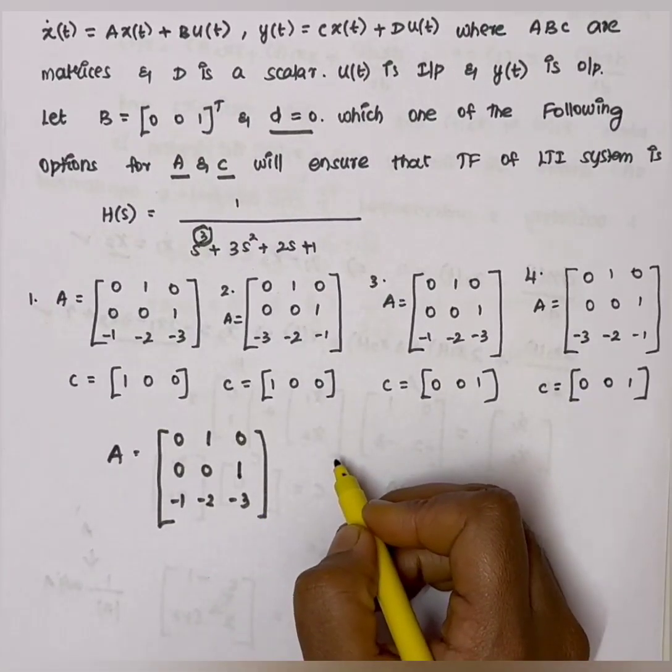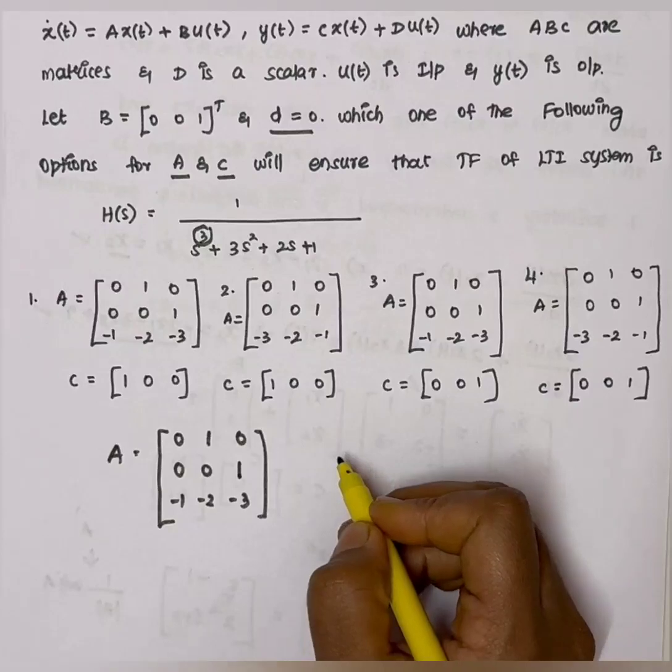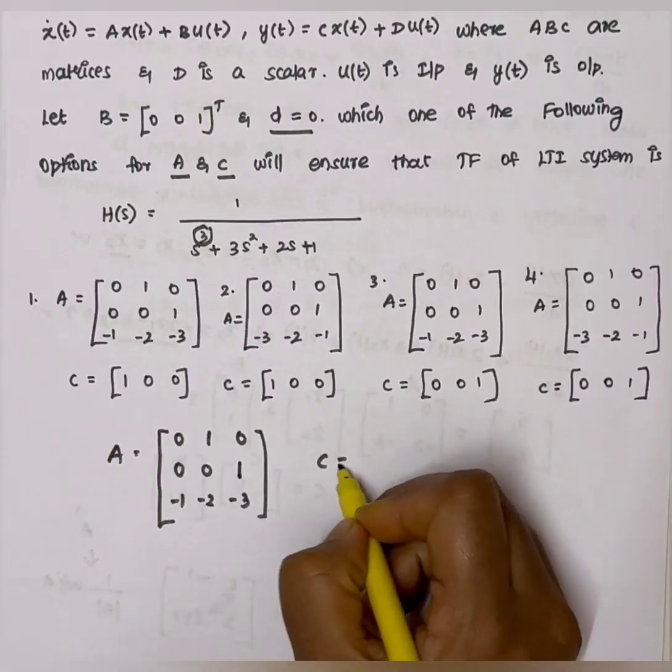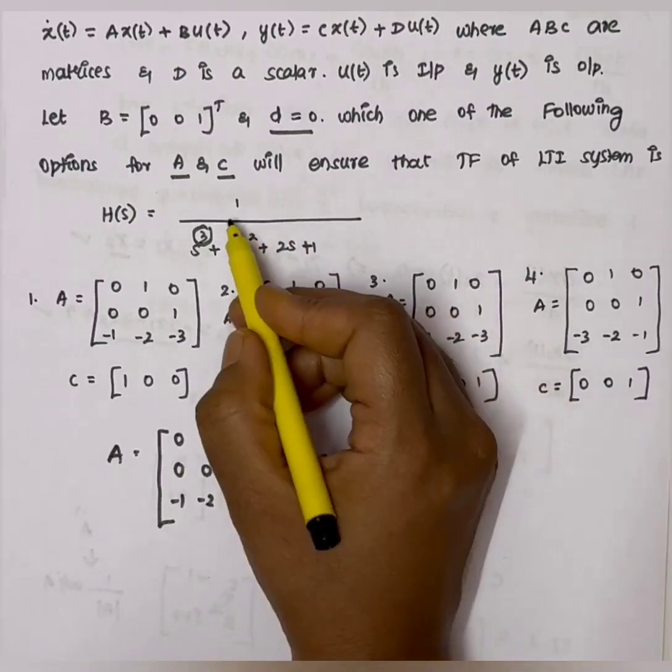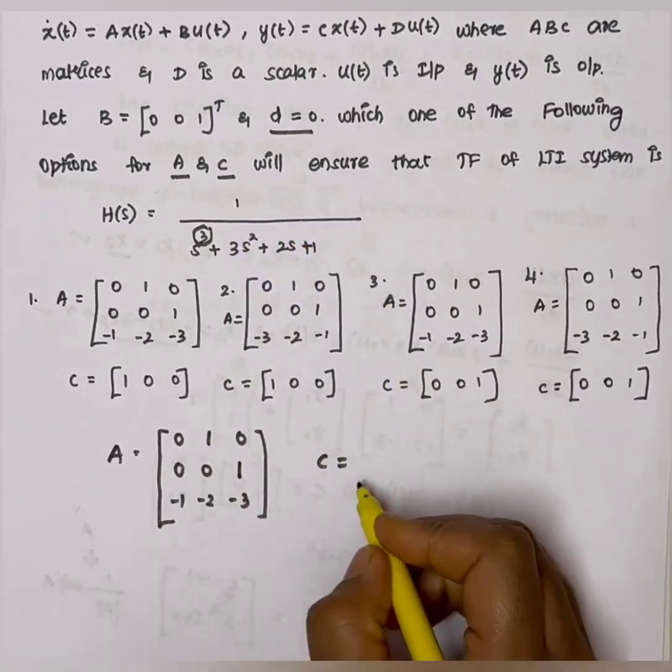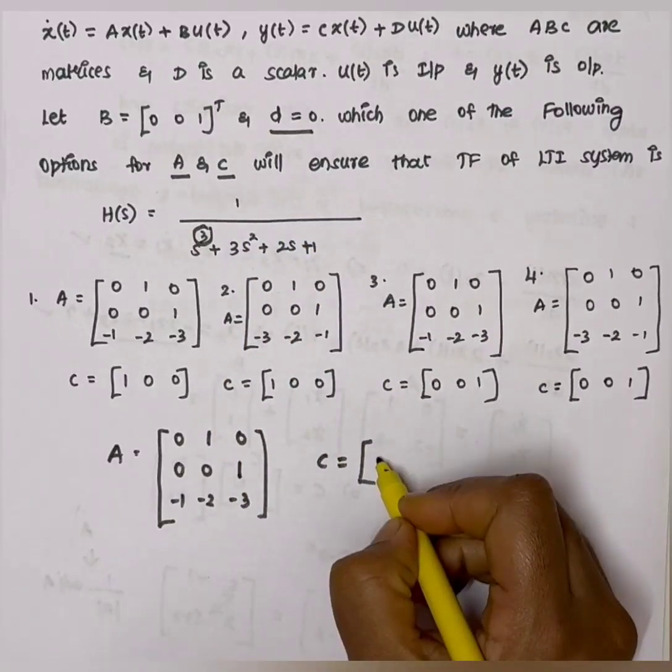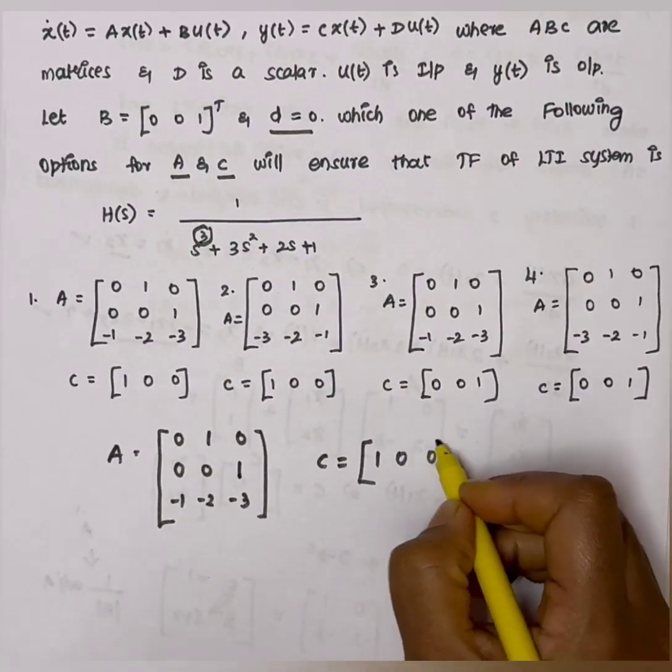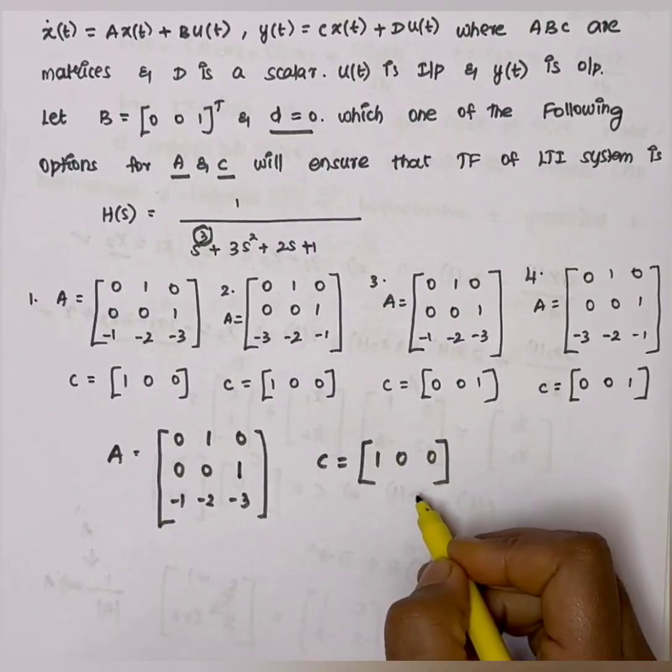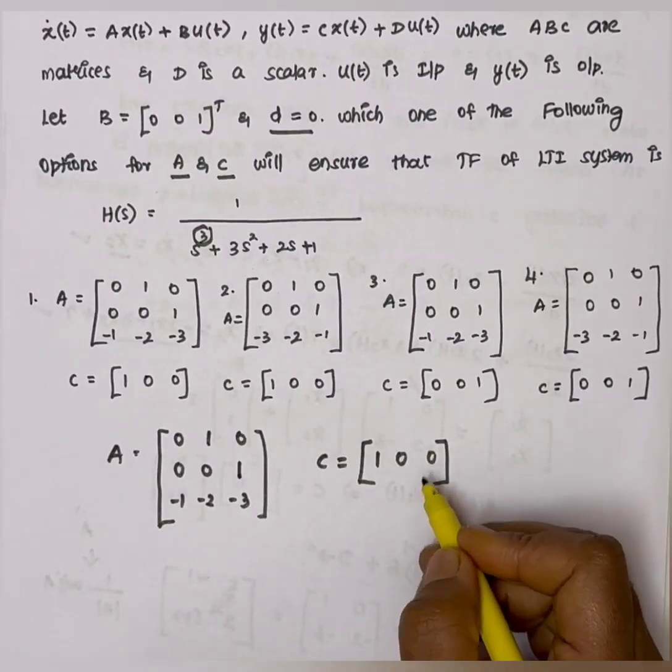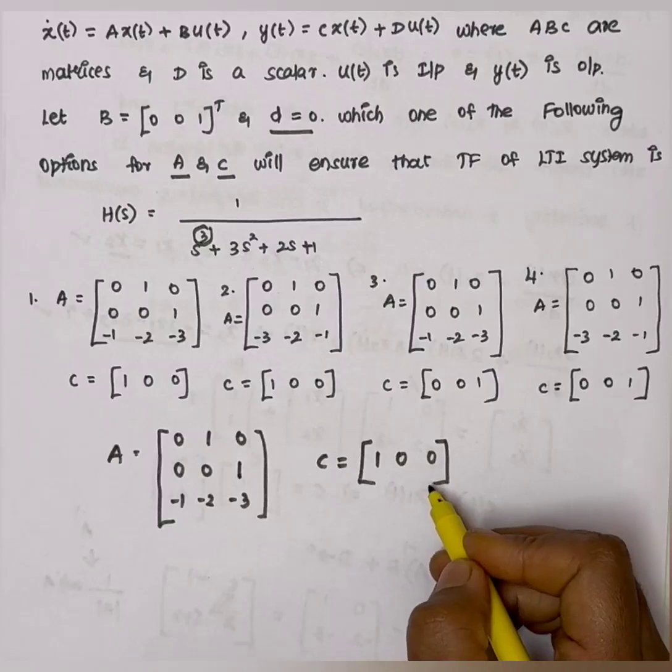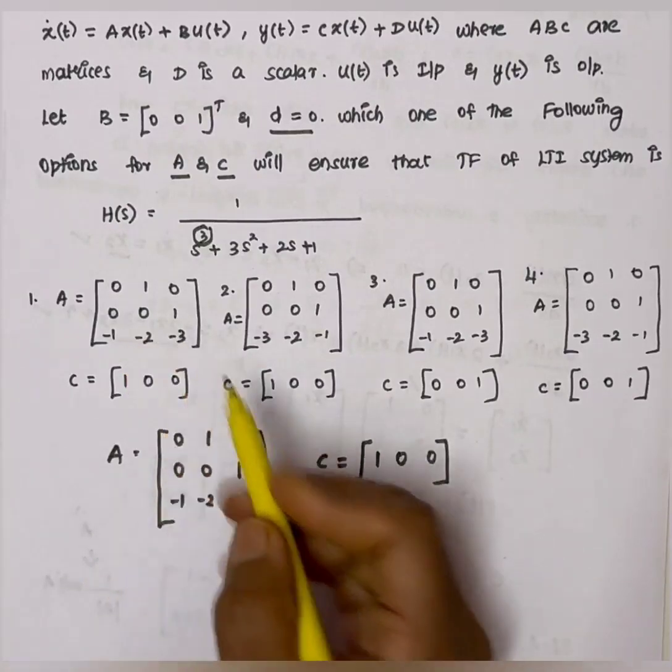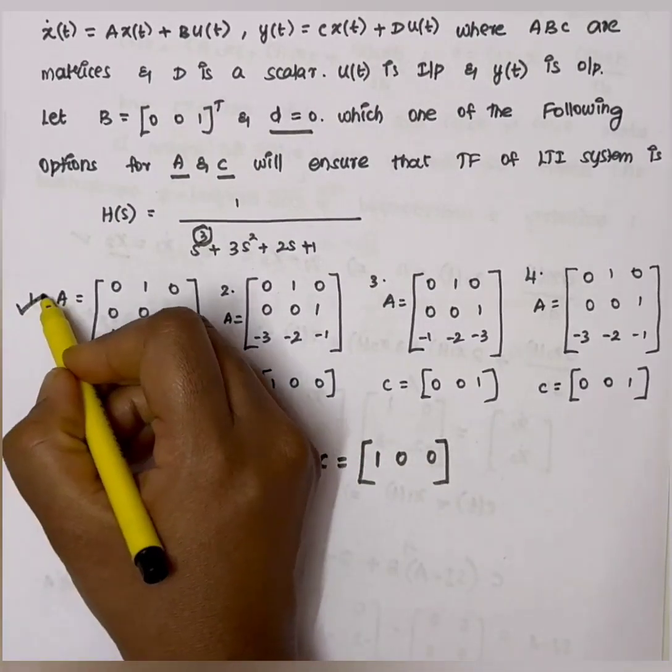Next is the C matrix. C matrix equals, here the numerator is 1, so C matrix is constant: 1, 0, 0. So this is A and C matrix. Here are the values. This is the value and here is the value. Option A matches. So this is the correct answer.